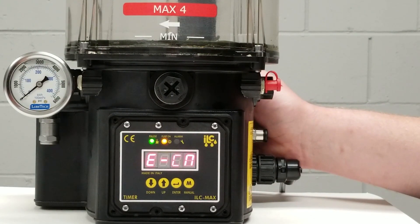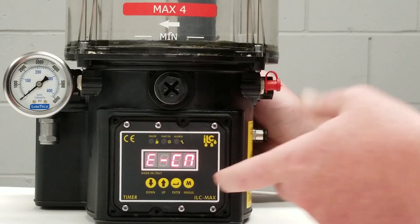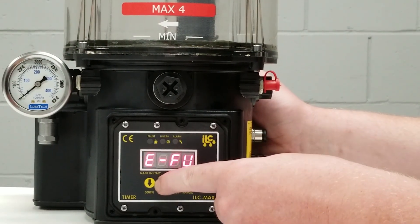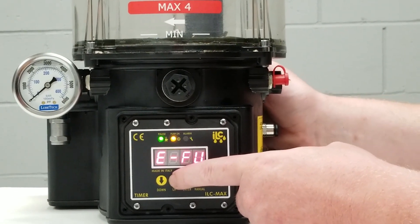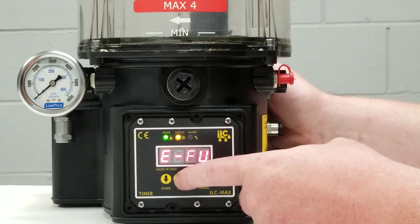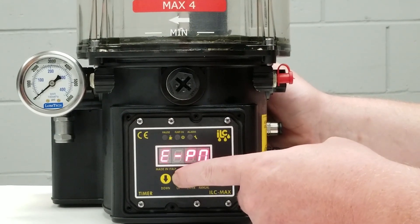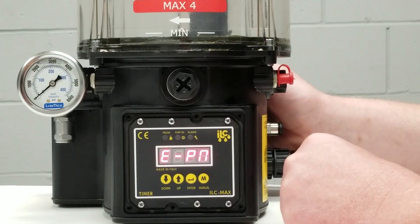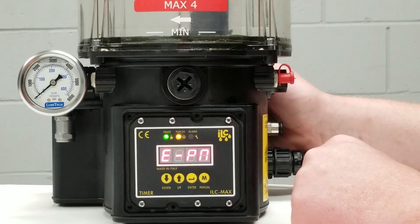From there I simply need to press the up button to go through my pump's pre-programmed status. E-FU just tells me that I'm going into the programming mode and your first parameter will be E-PN.